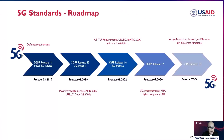If you look at the 5G standards roadmap, you can see different releases: Release 14, 15, 16, 17, and 18. Release 15 is what we call 5G Phase 1 — this is where the first 5G was released. Currently we are in Release 17, and Release 18 is still ongoing. Release 18 will be called 5G Advanced.